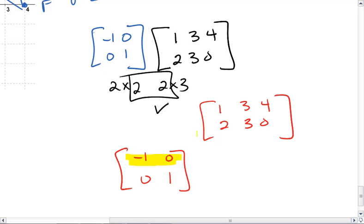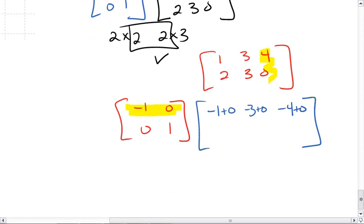We take our first row and our first column. Negative 1 times 1 is negative 1. 0 times 2 is 0. We then take the first row and the second column. Negative 1 times 3 is negative 3. 0 times 3 is 0. And lastly, we take the first row and the last column. Negative 1 times 4 is negative 4. 0 times 0 is 0. That gives us the first row of our new matrix.